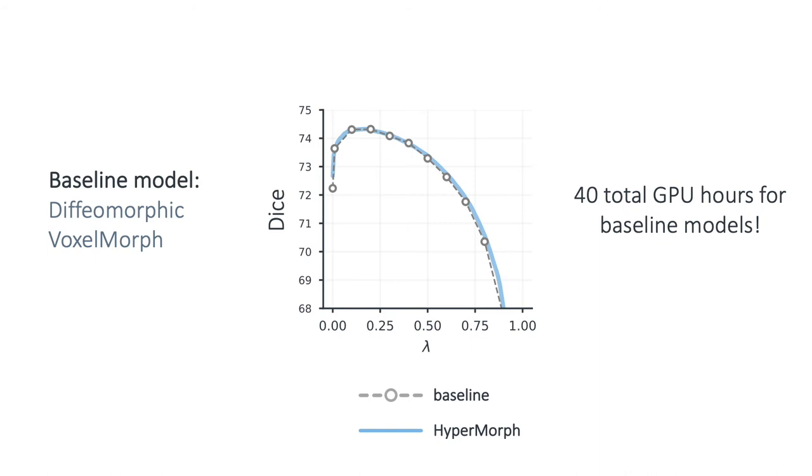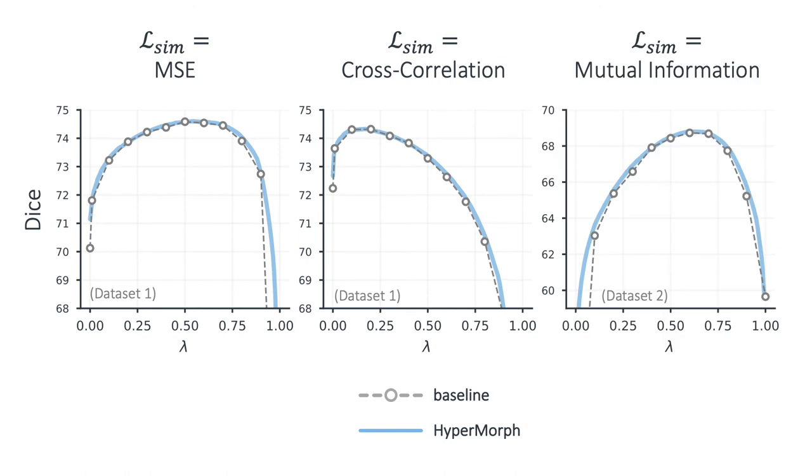We ran this experiment using cross-correlation as our image similarity metric. But even when we apply it to losses that use other similarities, like mean squared error or mutual information, we see the same results again, suggesting that HyperMorph can both inform us of the optimal lambda and be used directly for downstream registration. Our single HyperMorph model in each case is essentially encapsulating 40 GPU days' worth of baseline processing.